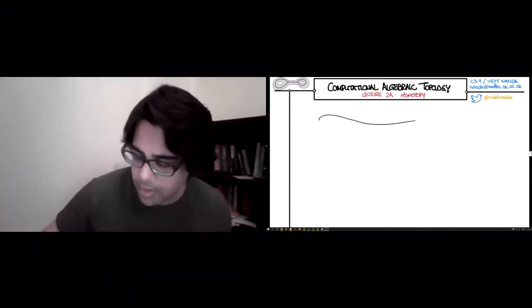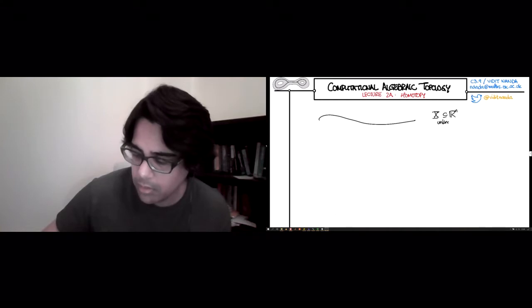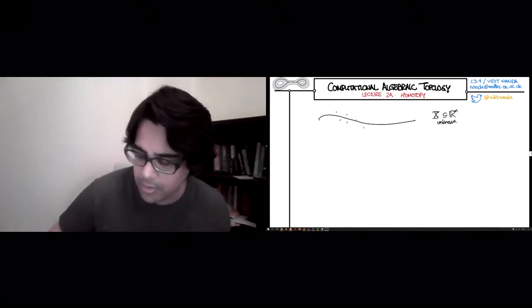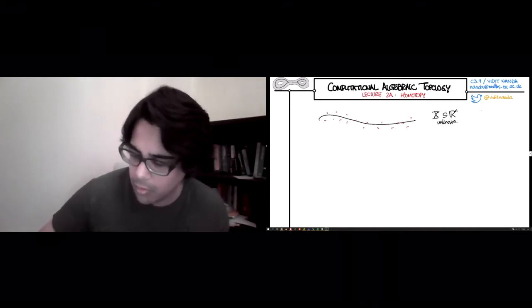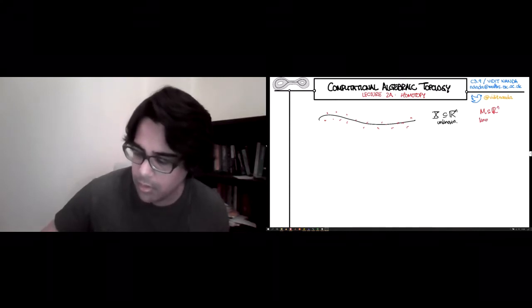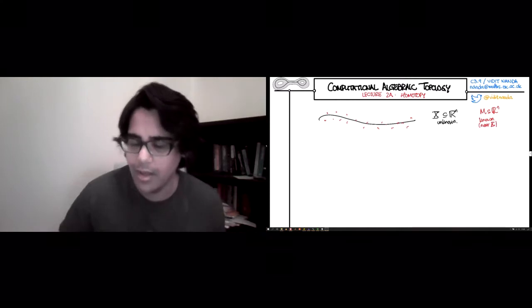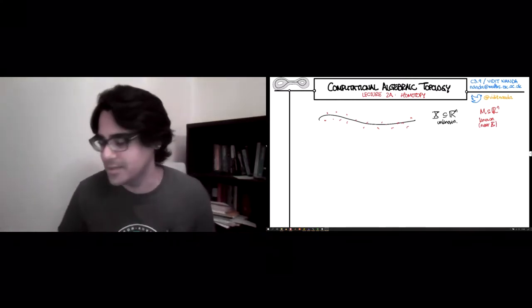We have some subset of R^n which is unknown, and we have lots of sample points which are known, and sort of near X. I guess we can make that precise - no more than epsilon away from X.